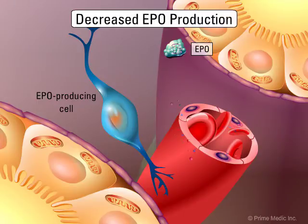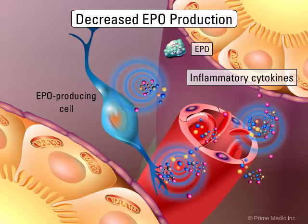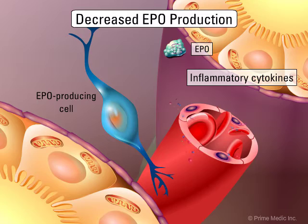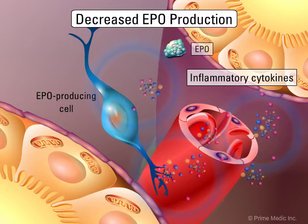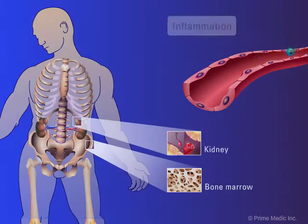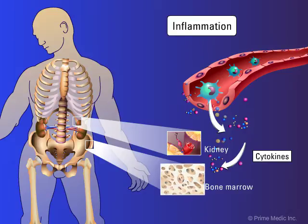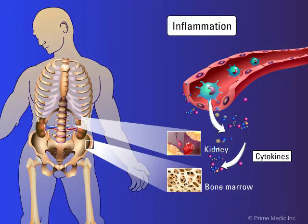With activated cytokines, the production of erythropoietin decreases and more cytokines are released to the surrounding tissue. Cytokines also have a profound effect in the bone marrow. Erythropoietin is carried to the bone marrow as part of the endocrine feedback loop of the regulation of the oxygen-carrying capacity of the blood.